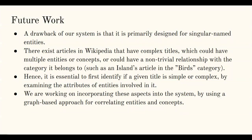For future work, a drawback of our system is that it is primarily designed for single entities such as actors like Shah Rukh Khan and Salman Khan or cricketers like Virat Kohli. Wikipedia also contains articles with complex titles involving multiple entities or concepts — such as a list of collaborations between Mani Ratnam and A.R. Rahman — or non-trivial category relationships such as an islands article in the birds category. It is important to identify whether a given title is simple or complex and which entities are involved. We are working on incorporating these aspects using a graph-based approach for correlating entities and concepts within a title, which would also help in complex title handling.